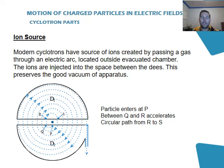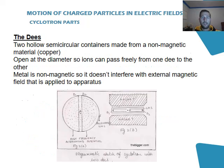Now in modern cyclotrons, the source of ions is created by passing a gas through an electric arc. This is located outside of an evacuated chamber to maintain the integrity of the vacuum inside the apparatus. The diagram that I've got on this slide, you can see that the ions are injected into the apparatus centrally, and then the performance of the cyclotron causes it to spiral outwards in ever increasing velocities.